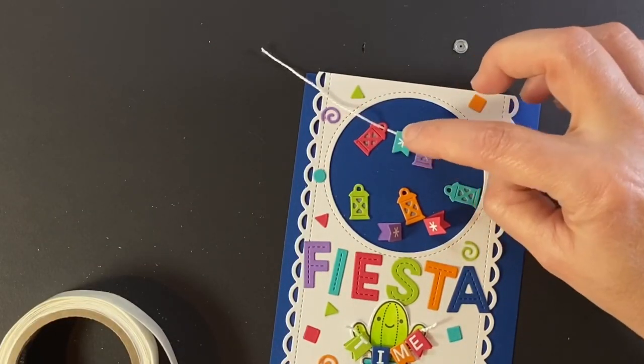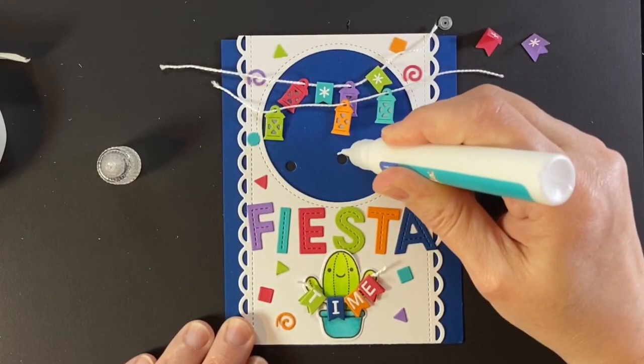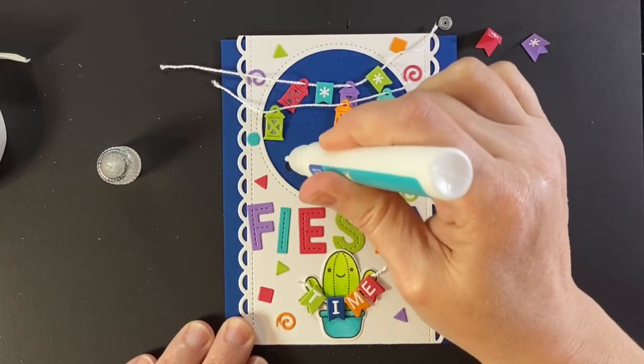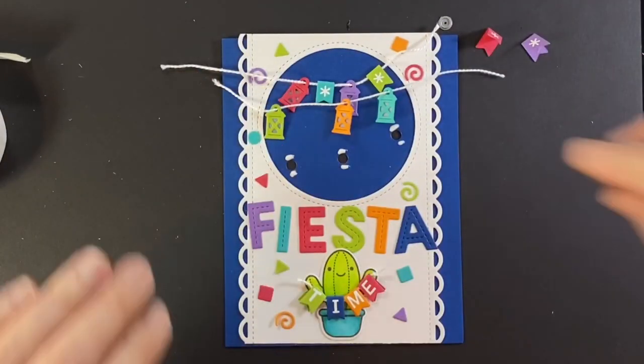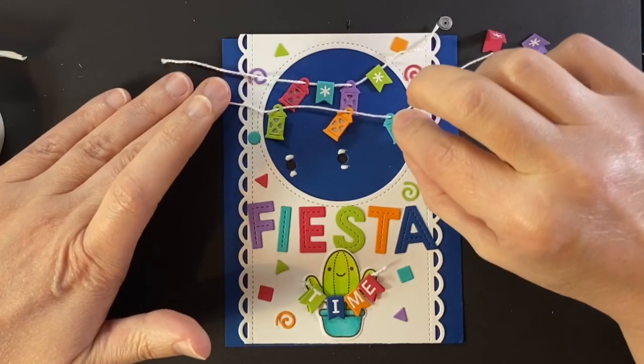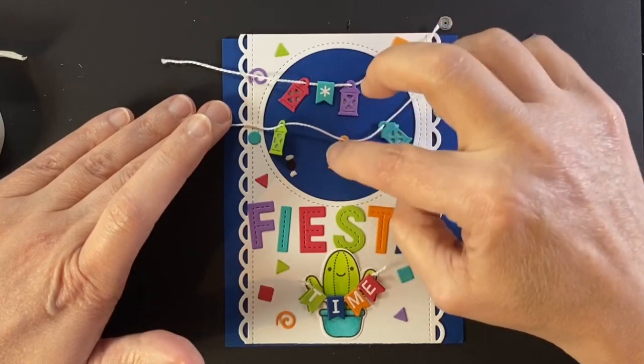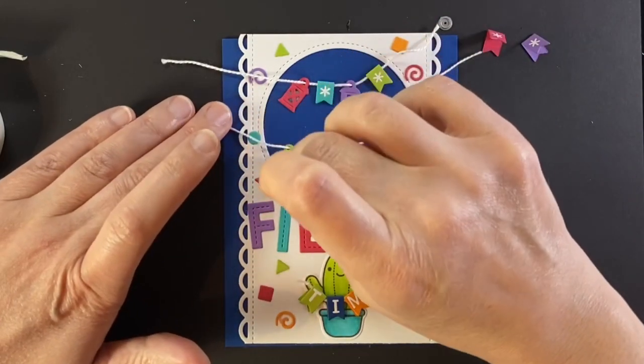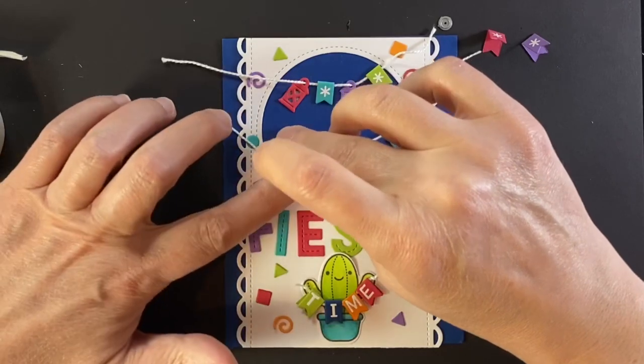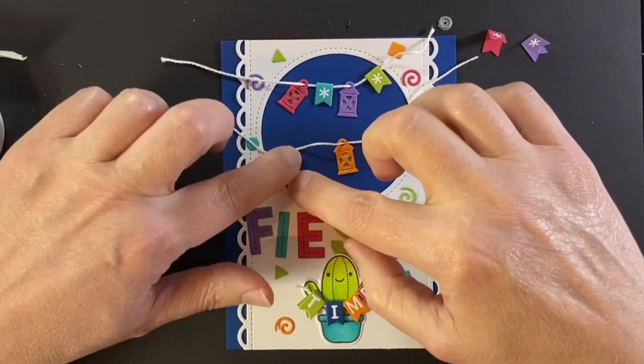I found it's easier if I just string up the lights and then glue those down and then attach the banners on over the string after it's all set. It's a lot less to get in the way as I'm trying to get them over the holes exactly.